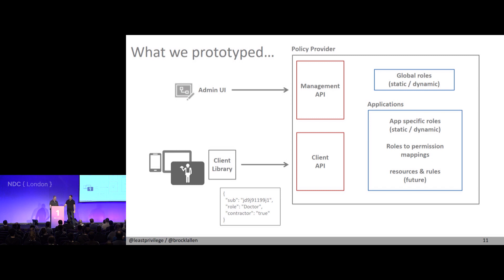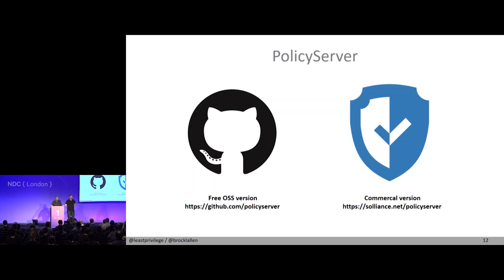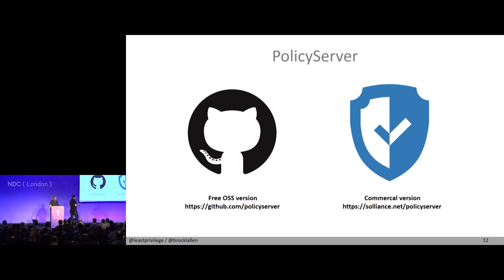So I had to ask Brock: do you think we can afford another open source project? The answer is yes and no. We took everything you need to implement the pattern — the separation of concerns, separation of identity from permissions, sending identity somewhere, getting permissions back, client library — and that is going live. It went live about 15 minutes ago, so that's on GitHub now: github.com/policyserver.